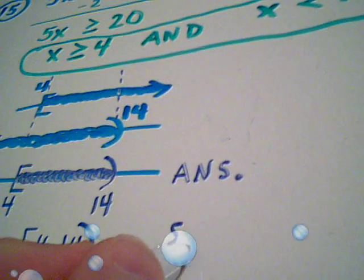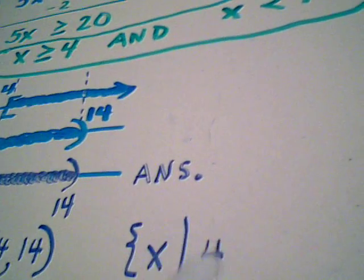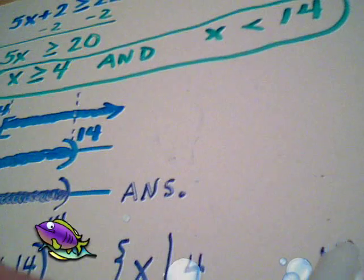If I write this in set builder notation, it's the set of all x's such that 4 is on the left, 14 is on the right.